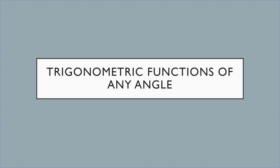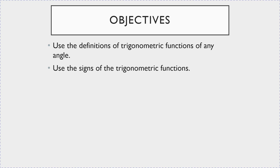Hi class. In this lecture we're going to start talking about trigonometric functions of any angles. We're going to work through two things: first, we're going to use the definition of trigonometric functions for any angles, and I'm going to show you how to derive those definitions using right triangles like we learned in the previous lecture. Then we're going to talk about how you use the sign of trigonometric functions to figure out the value for the other trigonometric functions. This lecture will introduce the topics and then we'll work a ton of examples.